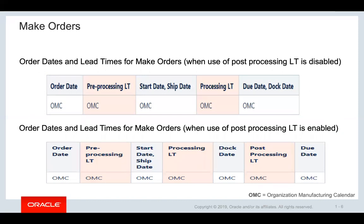Here the order dates and calendars used are shown for make orders. Different order dates are shown with respect to lead times and different calendars used in calculating these dates. In the case where post-processing lead time is not defined, the suggested due date and dock dates will be the same and calculated based on the org manufacturing calendar. If post-processing lead time is defined, the suggested dock date is calculated after subtracting post-processing lead time from the suggested due date. All dates in this case use the org manufacturing calendar.